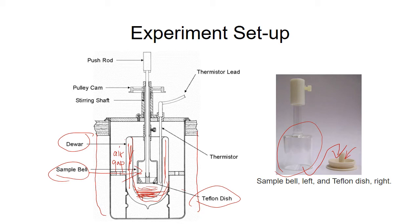A retainer screw is used to connect the cell with a stirring shaft so that the cell can rotate during the reaction. To start the reaction, you push a glass rod downward, which separates the Teflon dish from the cell, and the solid goes into the solution and the reaction starts.